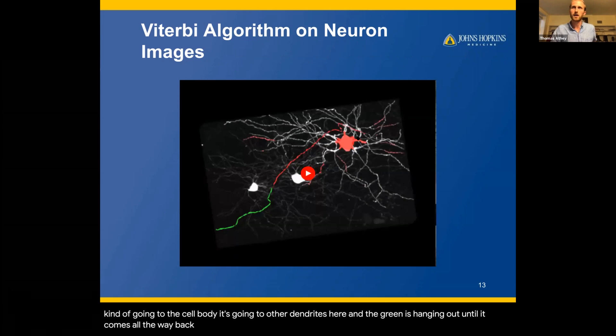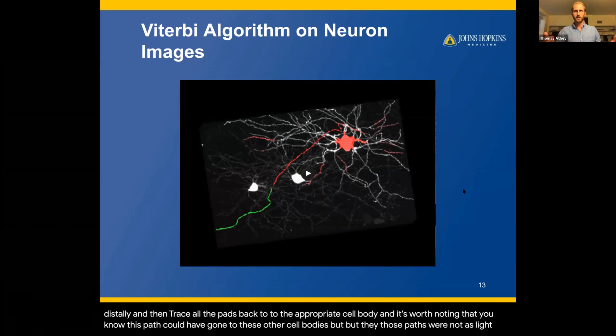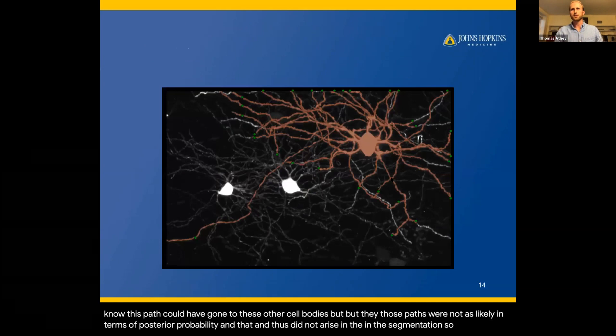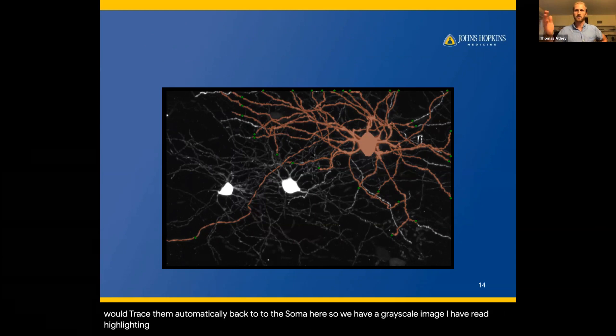So the algorithm works by placing a bunch of points distally and then tracing all the paths back to the appropriate cell body. It's worth noting that the path could have gone to other cell bodies. In this static image, points are placed distally on the neuron and then traced automatically back to the soma. The red highlighting shows the segmentation or trace being done from each of the green starting points.